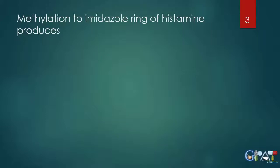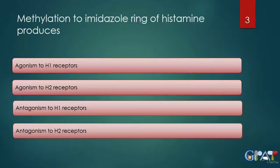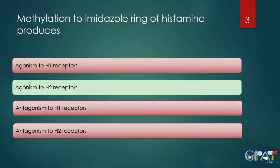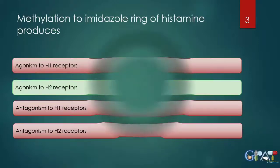Next question: methylation of the imidazole ring of histamine produces — agonism to H1 receptor, agonism to H2 receptor, antagonism to H1 receptor, or antagonism to H2 receptor? When we change the SAR of histamine through methylation of the imidazole ring, it causes agonistic activity to the H2 receptor.